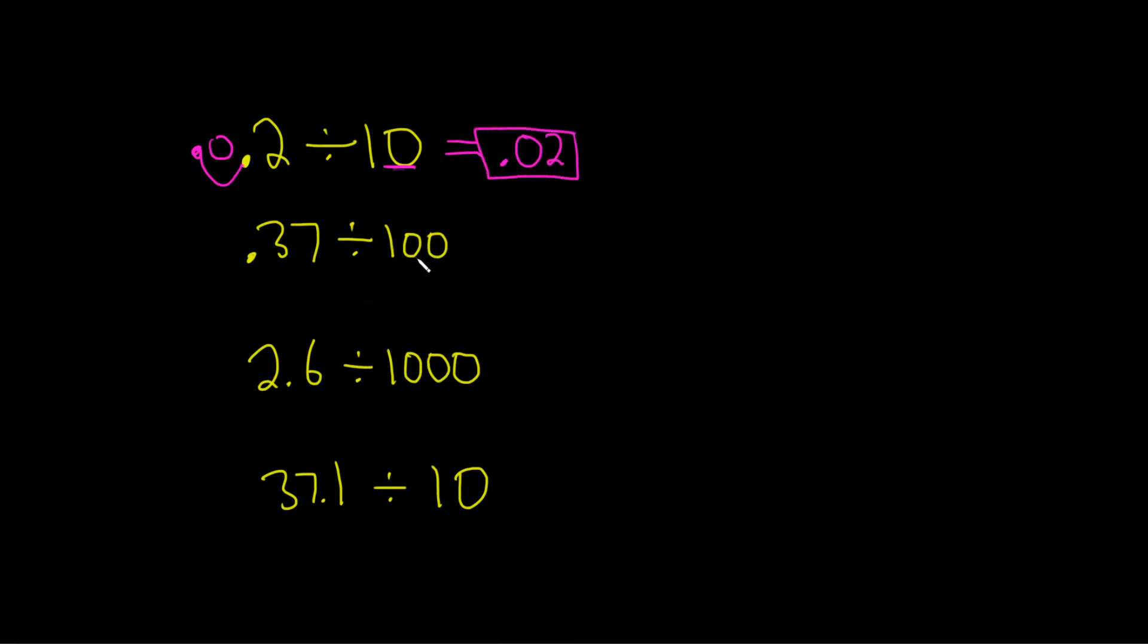Here, we're dividing by 100, so we go left twice. One, two, put a giant decimal, and then zero, zero. So that'll be .0037. Really nice stuff, right? Really beautiful.